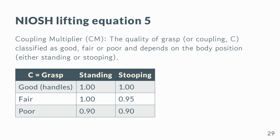The Coupling Multiplier (Cm) reflects the quality of grasp or coupling (C), classified as good, fair, or poor, and depends on the body position — either standing or stooping.